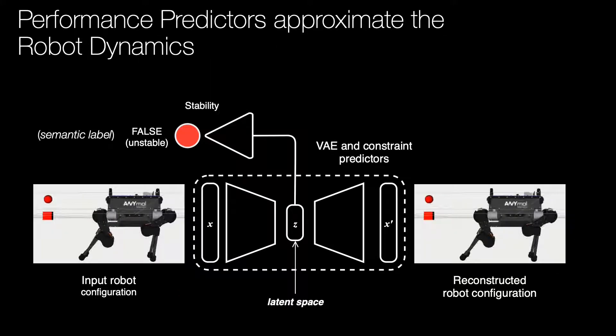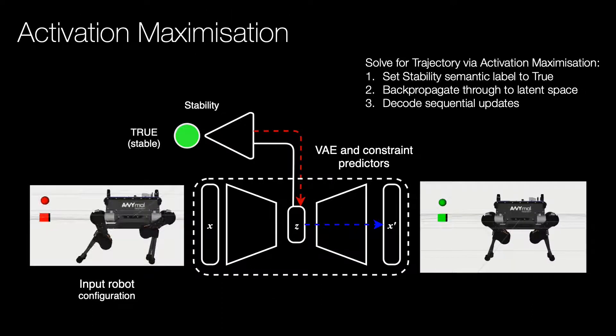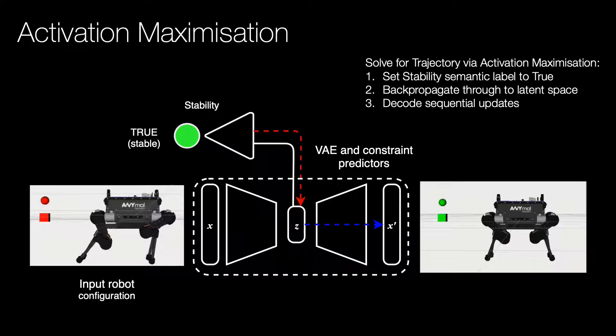We show how our performance predictors approximate complex robot dynamics and how they are used to apply complex constraints. Initially the robot is unstable and the stability predictor returns false. We flip the semantic label to true as we wish to apply the stability constraint. We then backpropagate into the latent space via the red arrow and decode subsequent samples via the blue arrow.